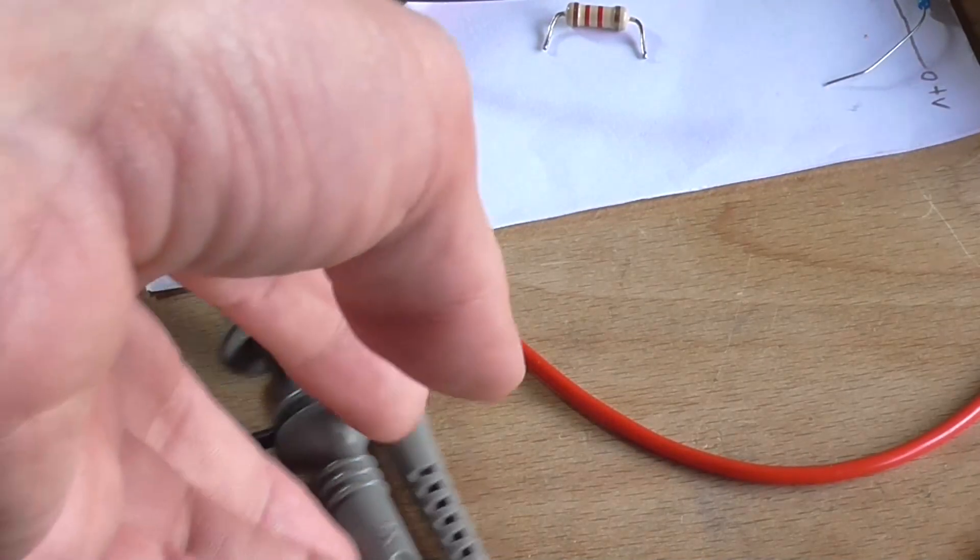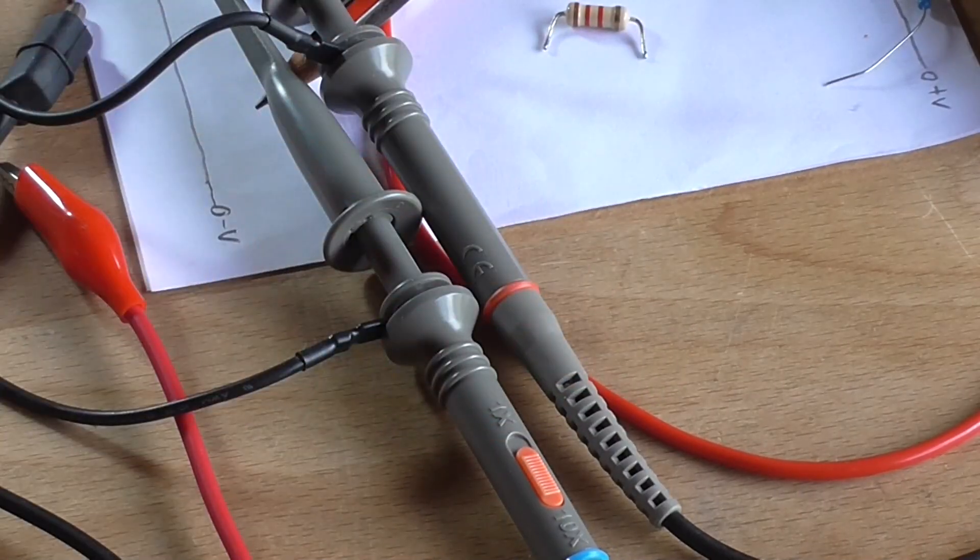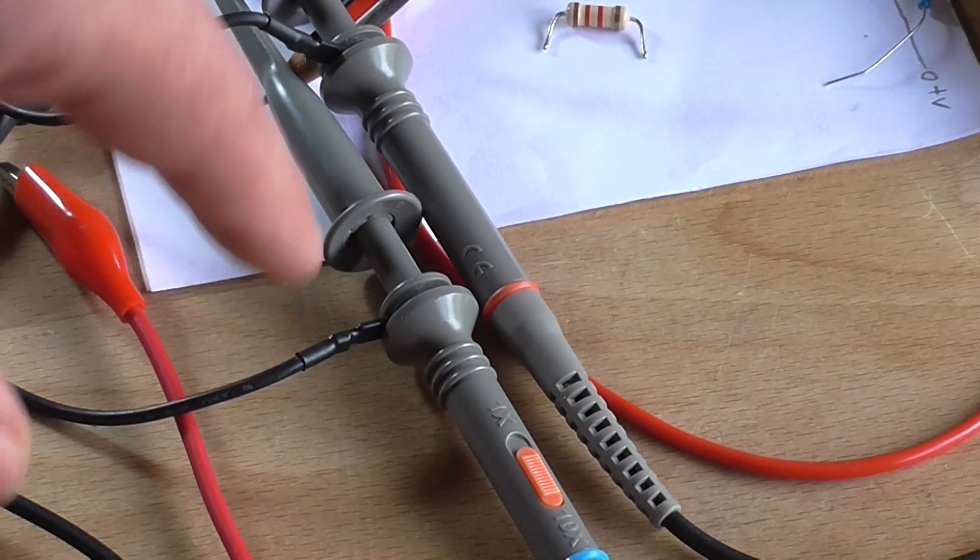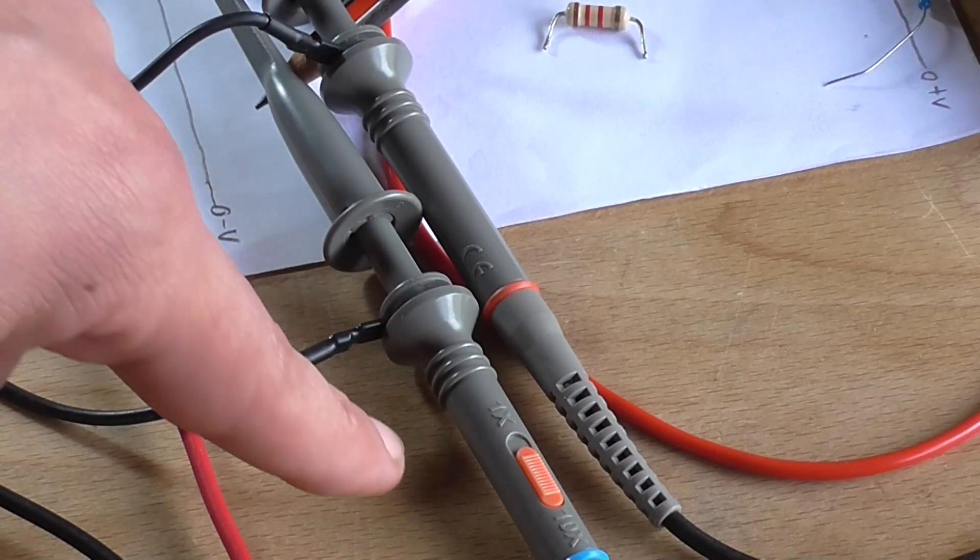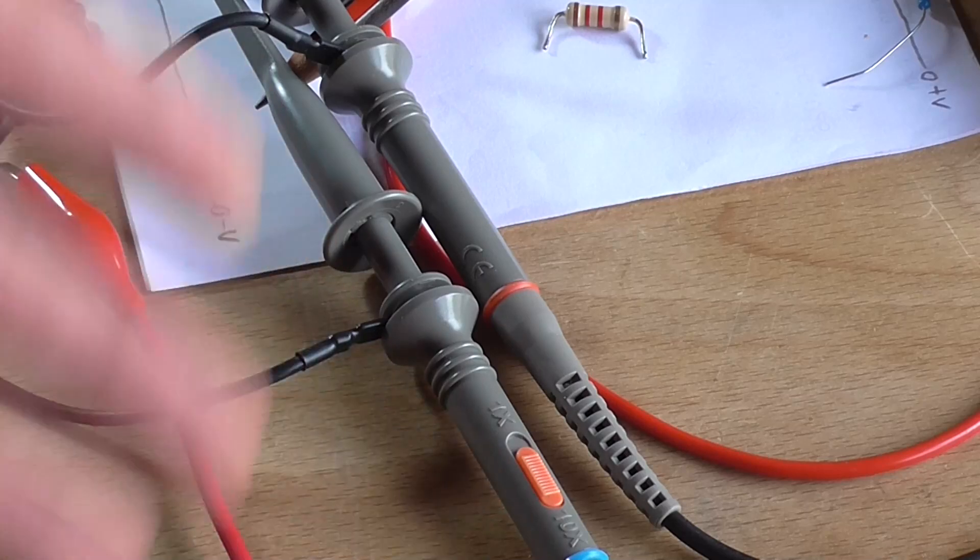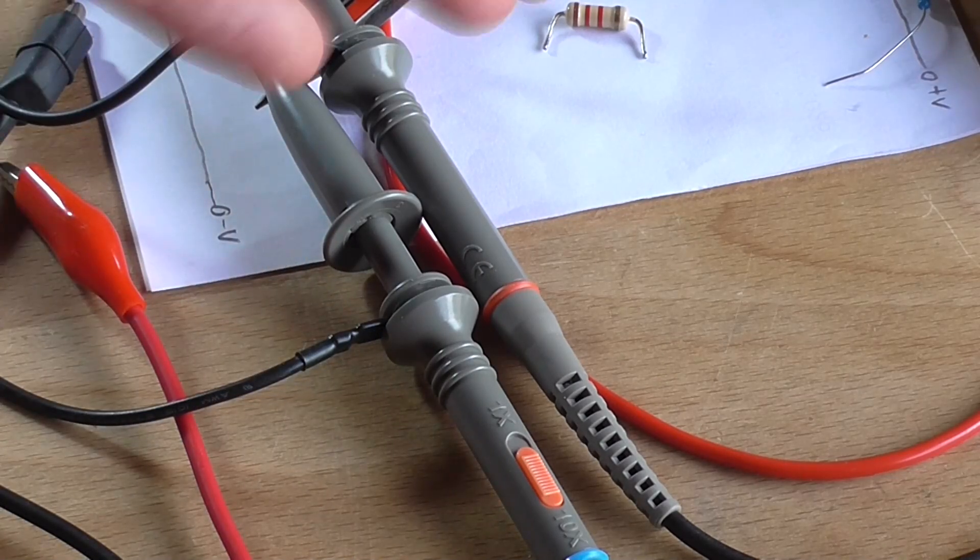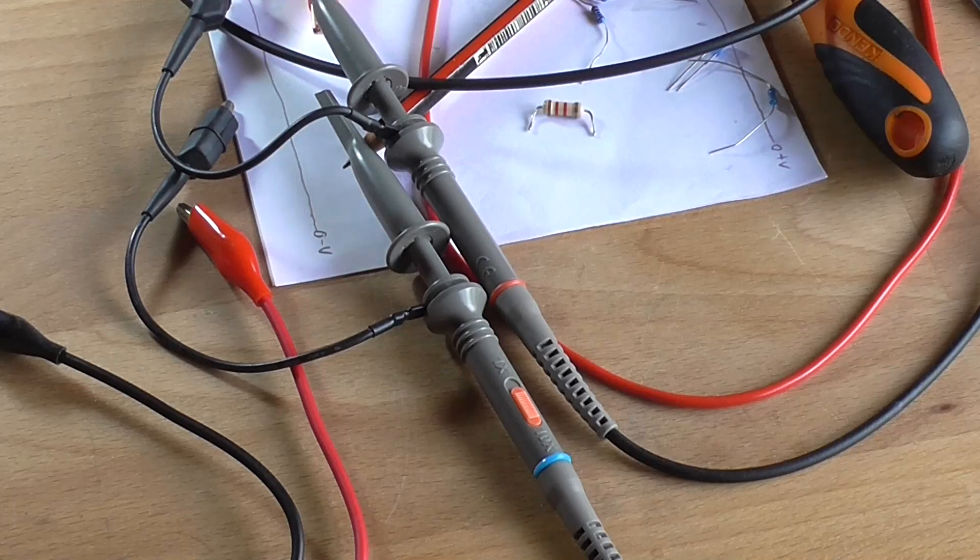So I always like to store my oscilloscope probes at the x10 mark. If it was a 100 times probe, it would be the 100. Just in case. Anyway, that's my tip for the day. Thank you very much for watching, and I'll see you in the next video.